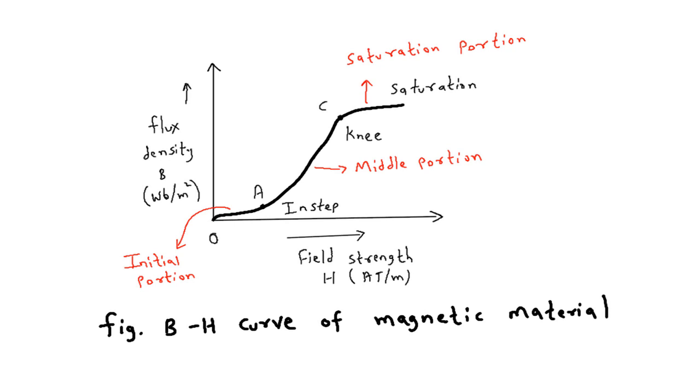Different magnetic materials have different BH curves, and non-magnetic materials have a straight line instead of a curve.